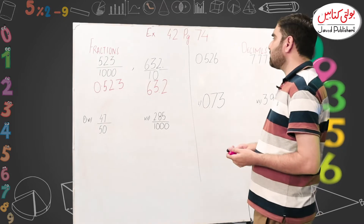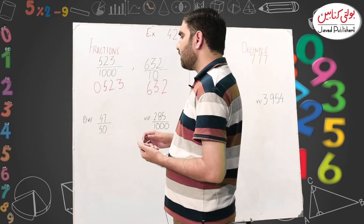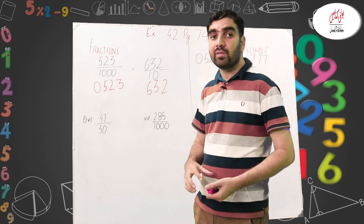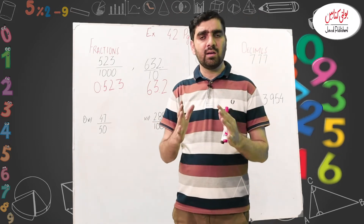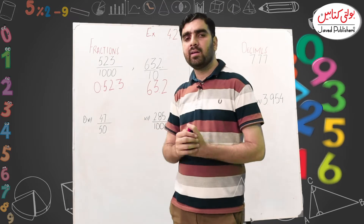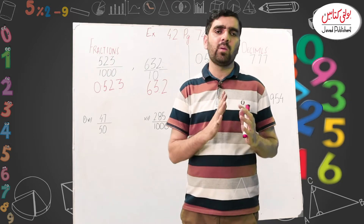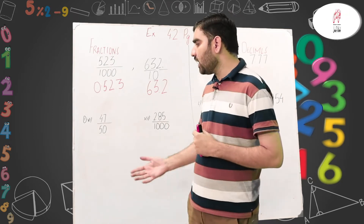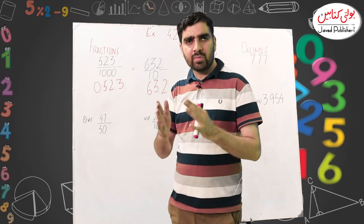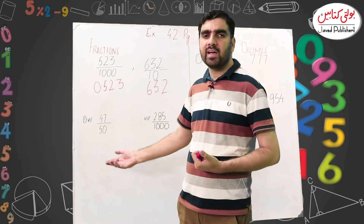Now, going to Exercise 4.2, Question number 1, Part 6. Here you will see that you have 47 over 50. To convert this to a decimal, we need the denominator to be 10, 100, or 1000. Our denominator is 50, so we think of a number to multiply it by to get 10, 100, or 1000. We can see that if we multiply 50 by 2, it will become 100.